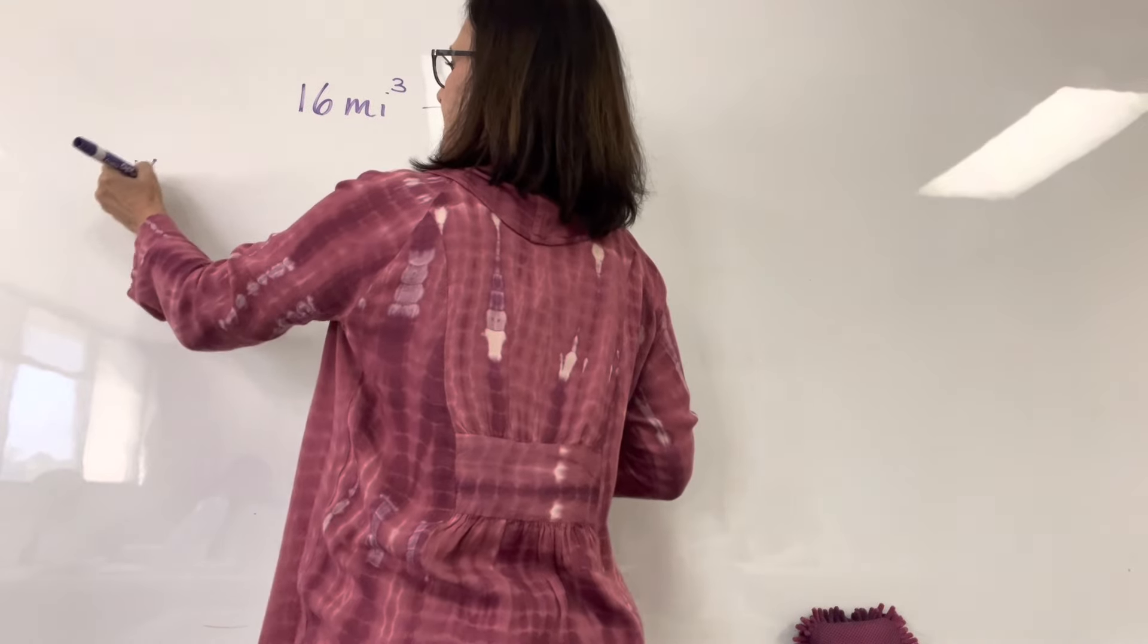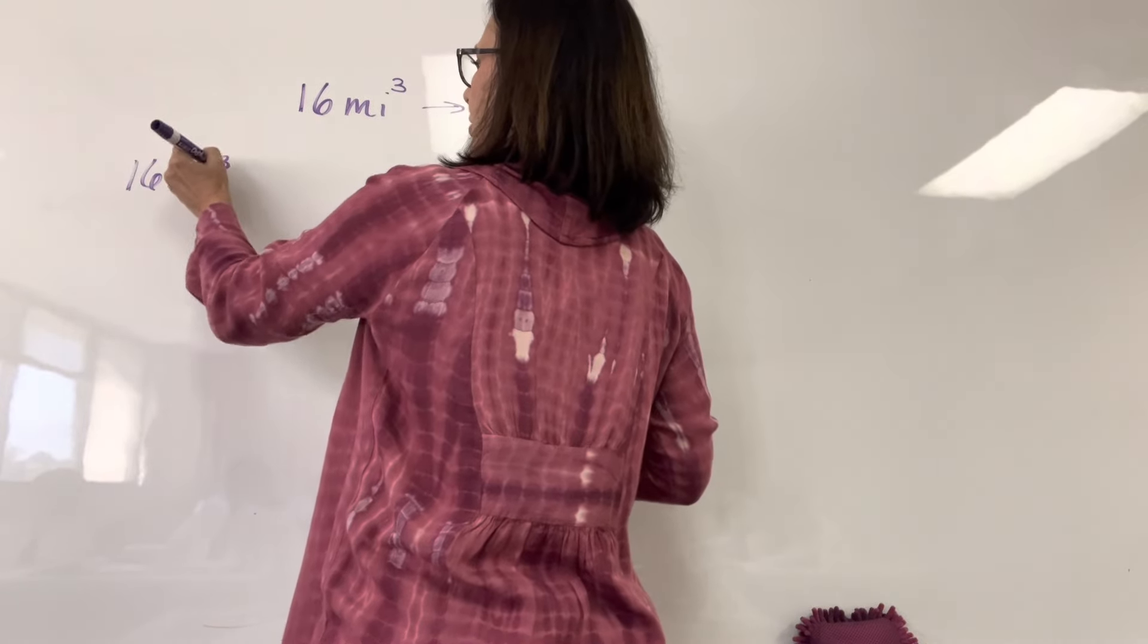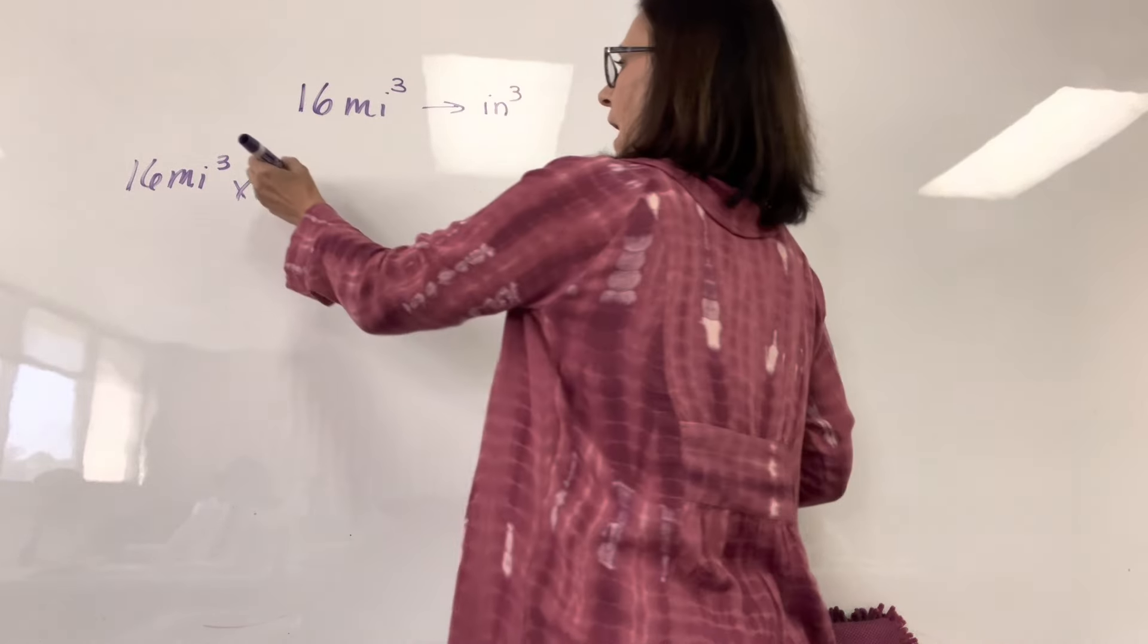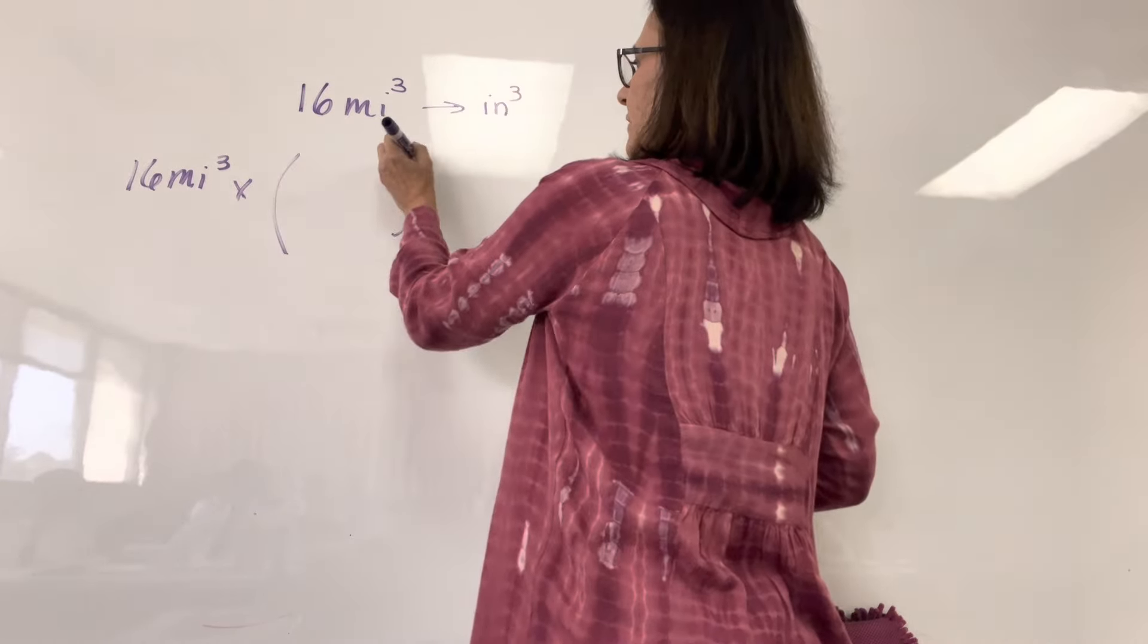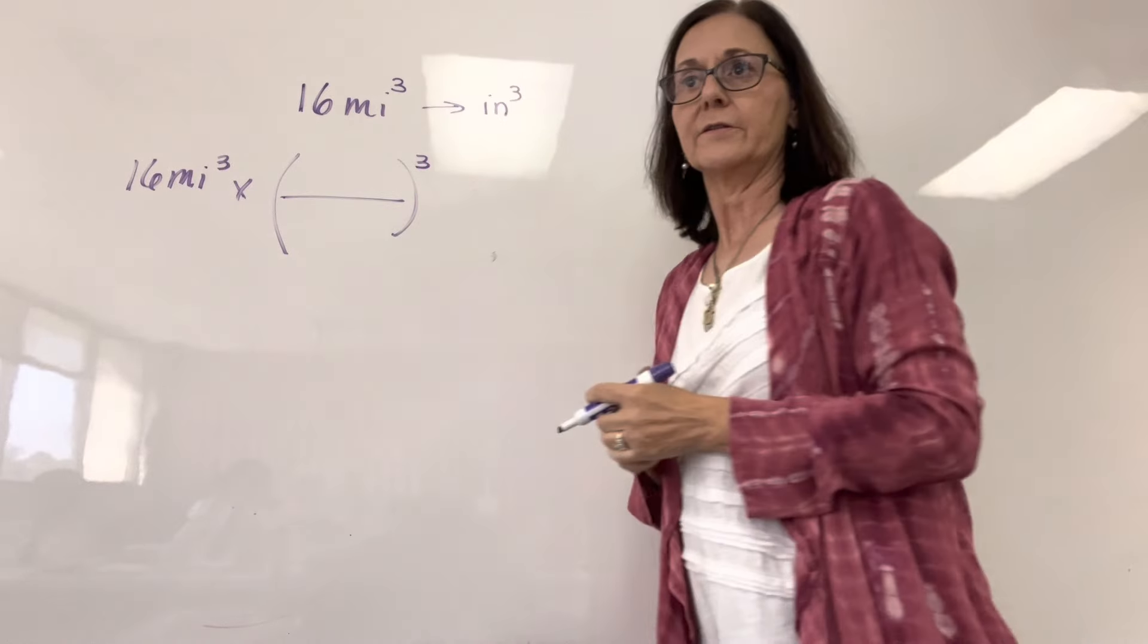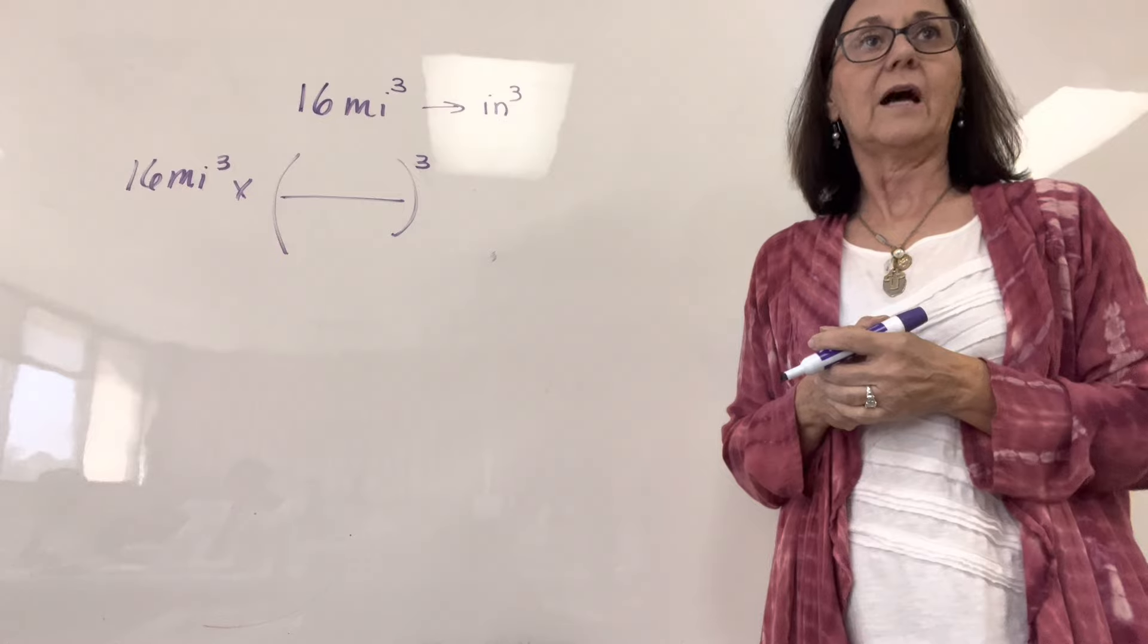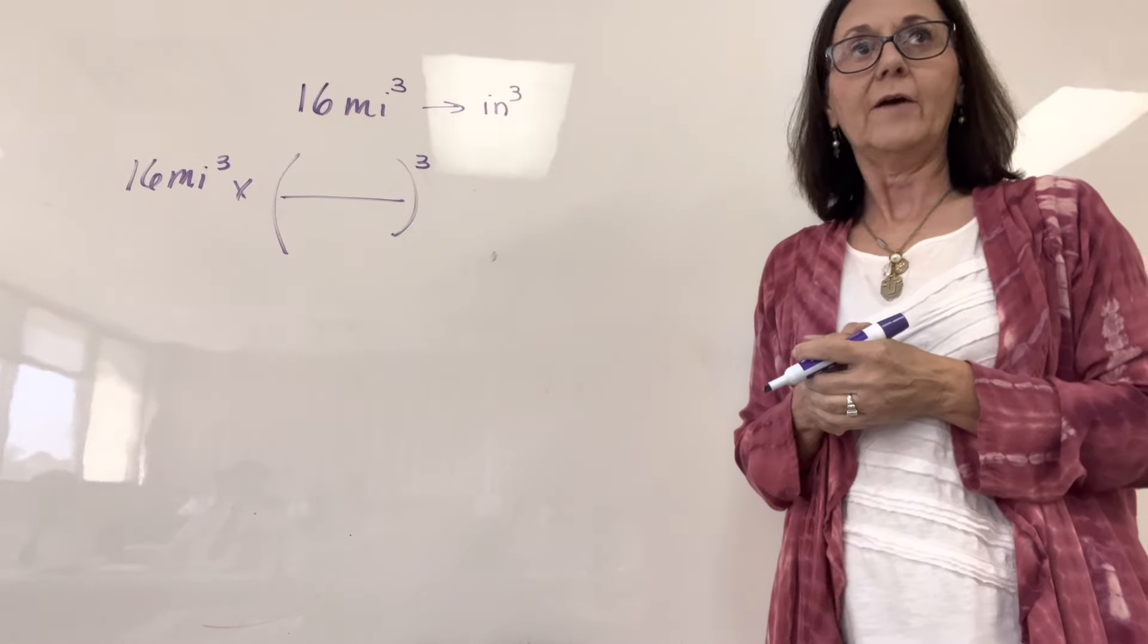All right. So I start out with 16 miles cubed. Okay, guys, if I look, I need three unit multipliers, right? You have to write it three times. You don't have to write it three times...